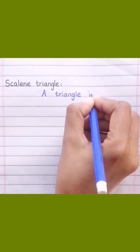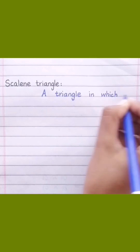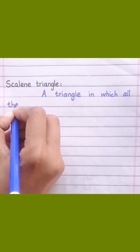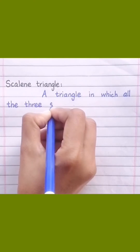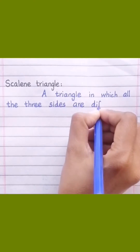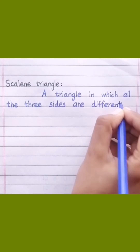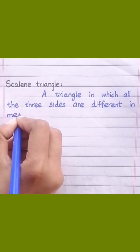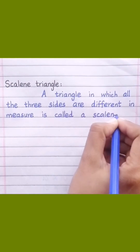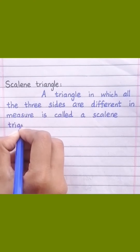Scalene triangle: a triangle in which all three sides are different in measure is called a scalene triangle.